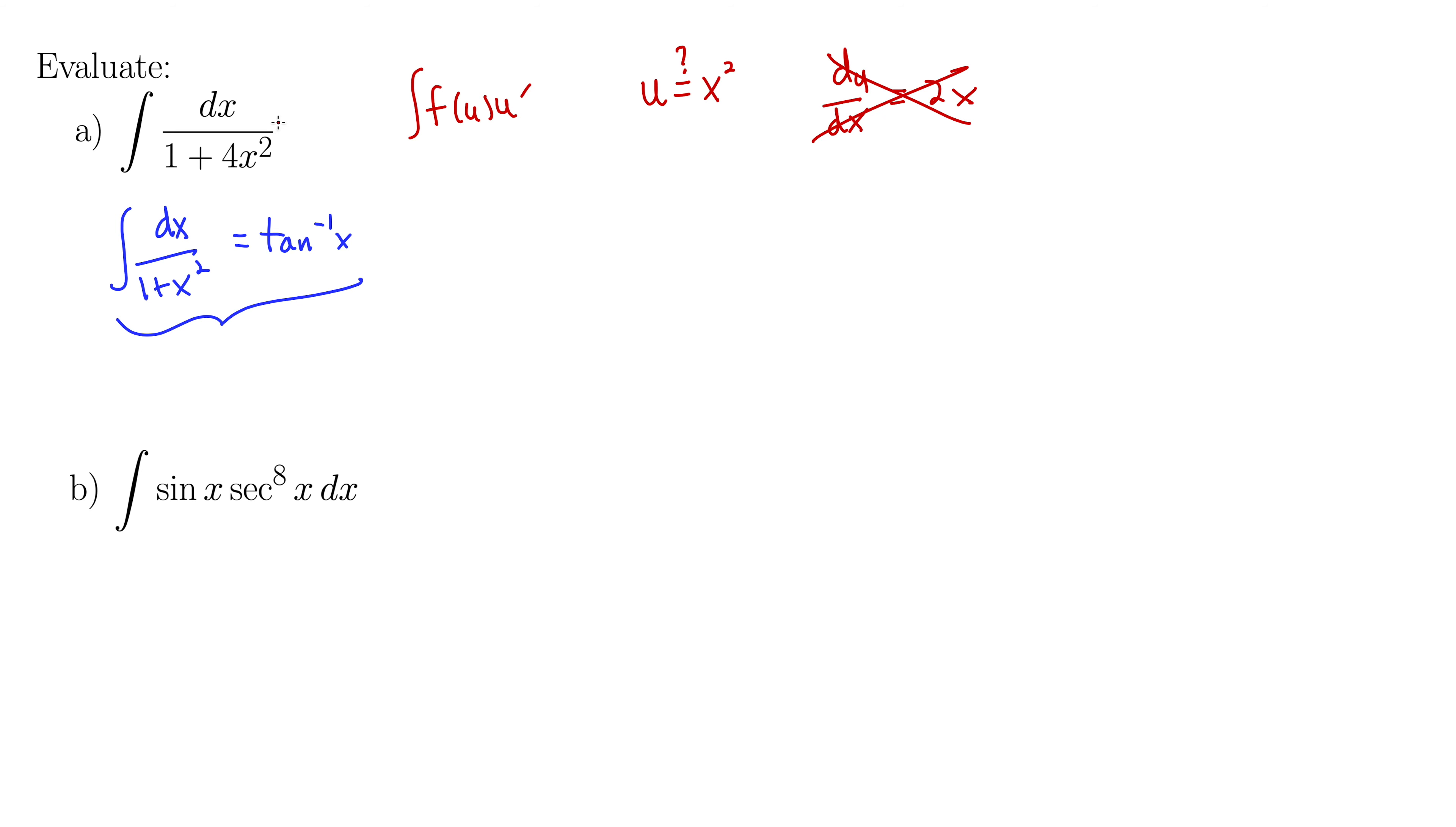What if we let, so I'm looking at this 4x squared, what if we let u be 2x? Because then we have our u squared right there to replace 4x squared. Furthermore, once we take the derivative of this, du dx, we don't have an extra x hanging around. du dx is 2, which we can quickly solve for dx is du over 2.